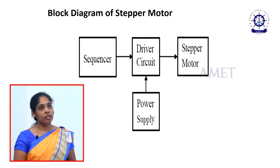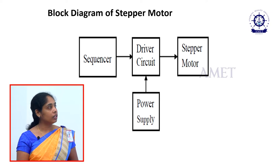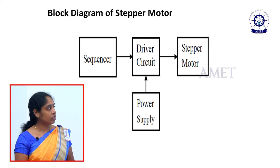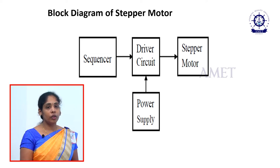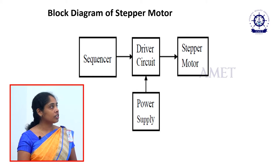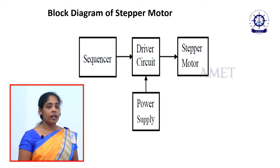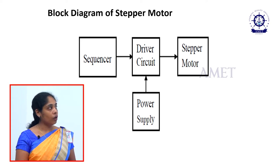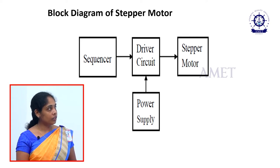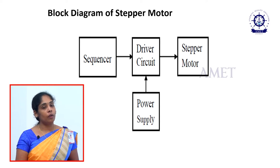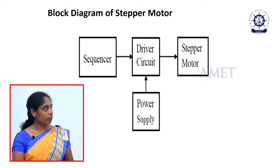This is the basic block diagram of a stepper motor. We have a sequencer, a driver circuit, the stepper motor itself, and a separate power supply to the driver circuit. The sequencer is the switching circuit mainly used to change the direction of rotation. The driver circuit controls the direction of flux or current rotation. We also have many types of stepper motors available, which we will see in upcoming slides.